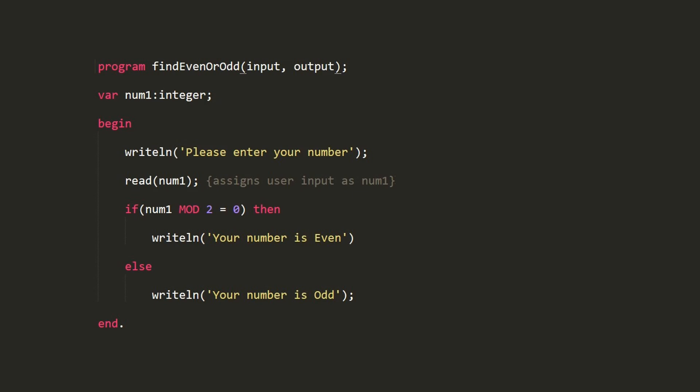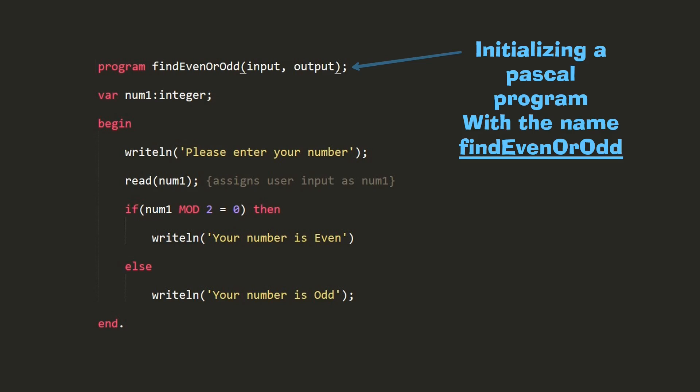The first thing in a program is initializing a program with a user-given name, also known as an identifier. Here I have given 'find even or odd' as my identifier, which is my program name.